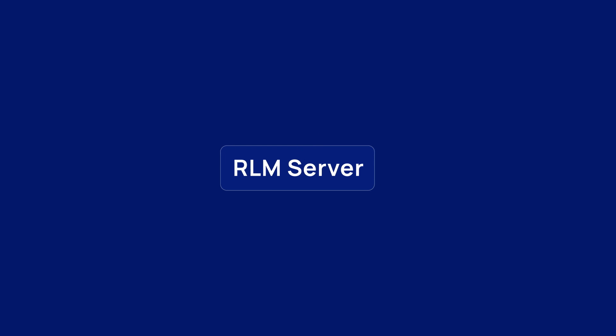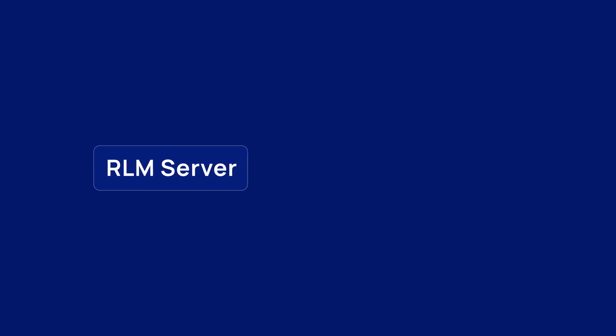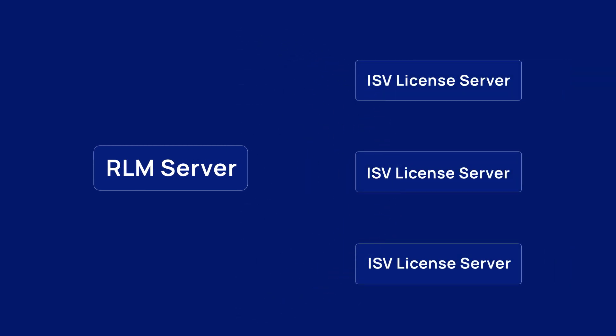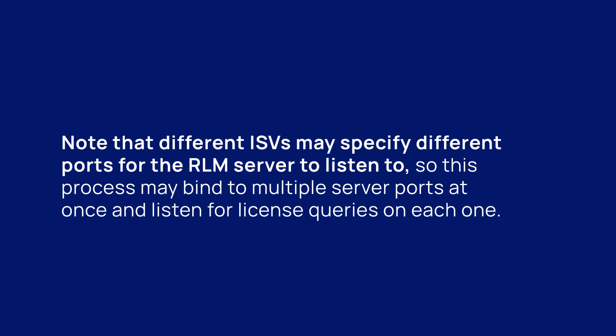The RLM server will then pass the license queries to the ISV license servers. These are specific to the individual software providers and enforce their company's licenses. Note that different ISVs may specify different ports for the RLM server to listen to, so this process may bind to multiple server ports at once to listen for license queries on each one.